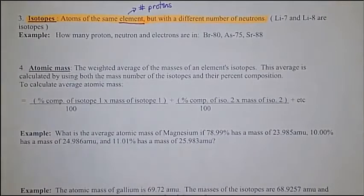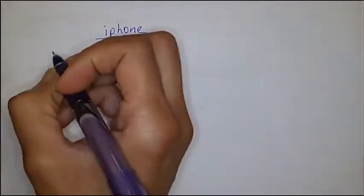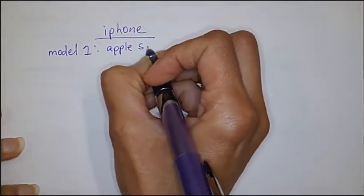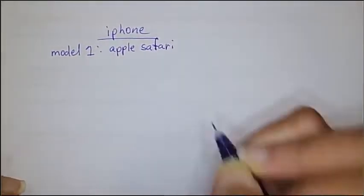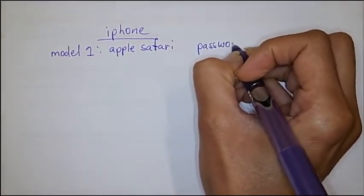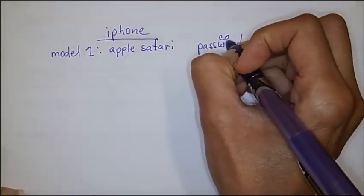Let's talk about iPhones for a second, then we'll go back to isotopes. We've got the iPhone — it's a type of phone we all know and admire. Two features of the original iPhone model 1: it had Apple Safari, which gave internet in everyone's hands — a really big deal. And another feature is that you had to put in a passcode to access your iPhone.